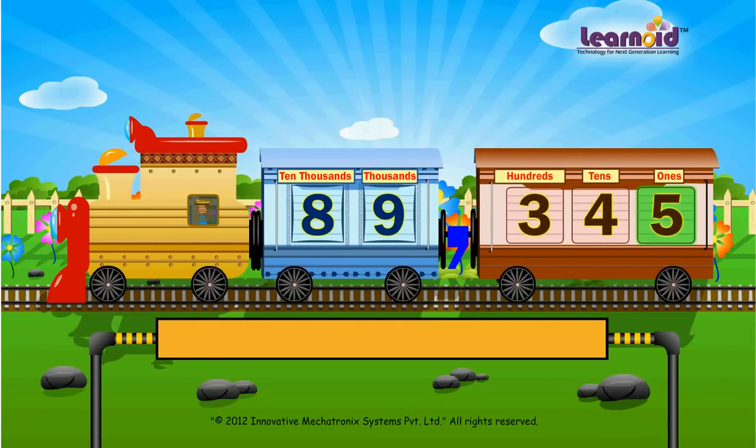Number 5 is in the 1's window. Its place value is 5.